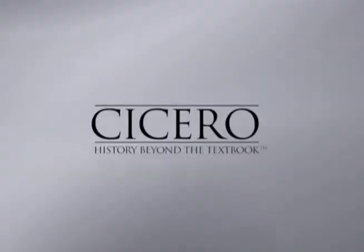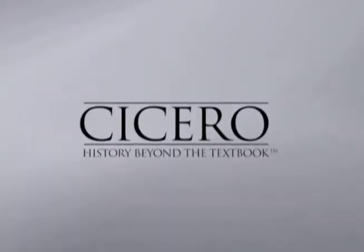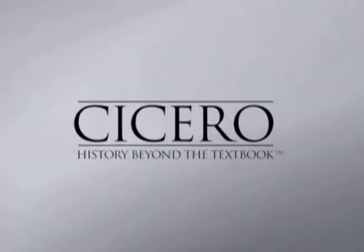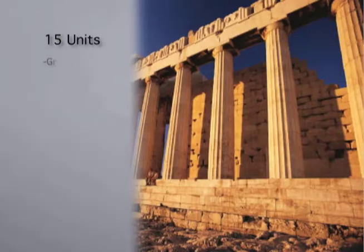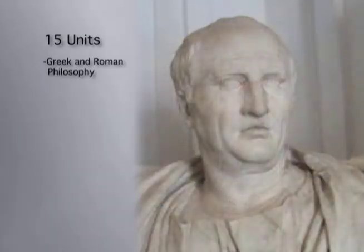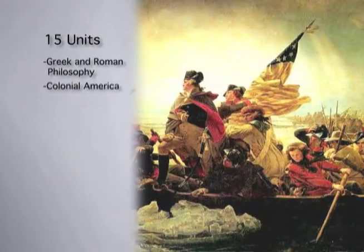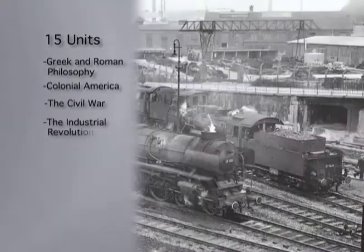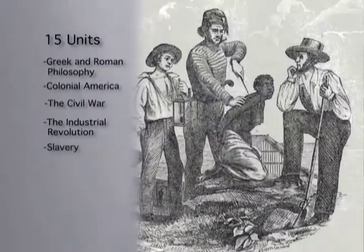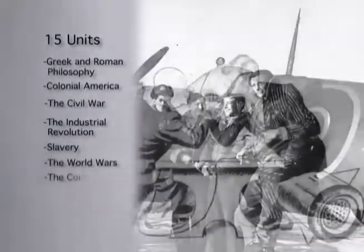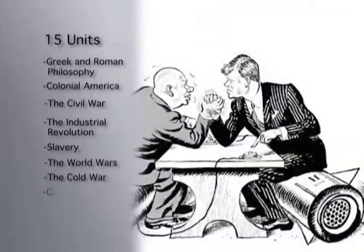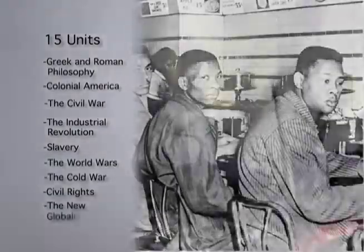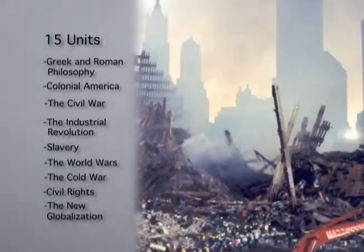Cicero is divided into 15 units of history, starting with Greek and Roman philosophy that greatly influenced our country's founding documents, and continuing through colonial America, the Civil War, the Industrial Revolution, slavery, the World Wars, the Cold War, the Civil Rights Movement, right up to present-day times.